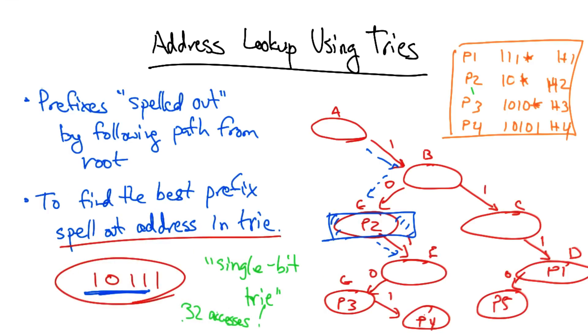At worst, 32 accesses in the worst case. To put this in perspective, an OC48 requires a 160 nanosecond lookup, or simply four memory accesses. So 32 accesses is far too many, especially for high-speed links.